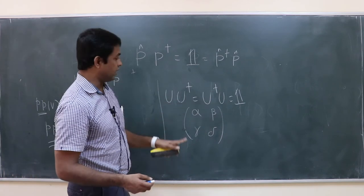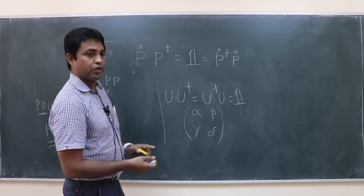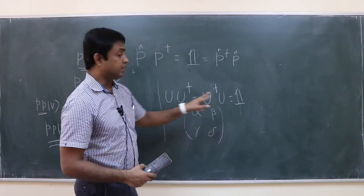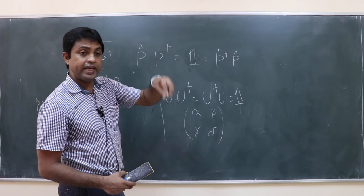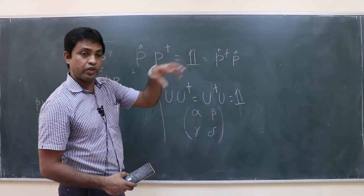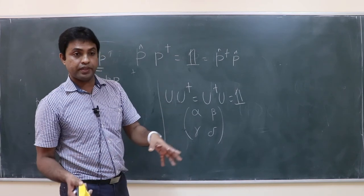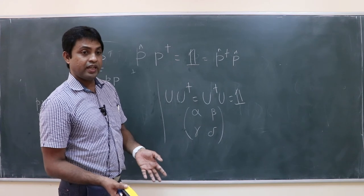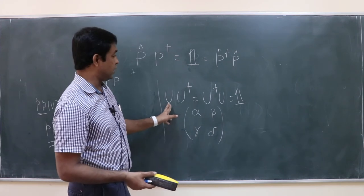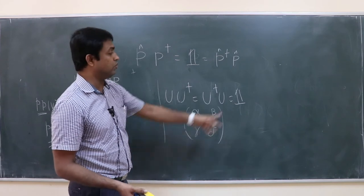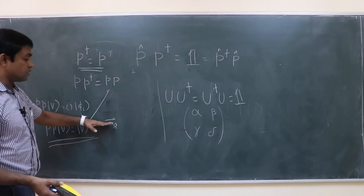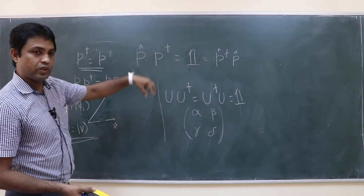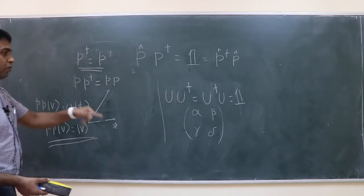When we say U U† = I for an operator, it means: for any vector in its domain, the operator must return the identity result. You cannot check just one specific example. The operator has to act on each and every vector in its domain to qualify as unitary. I will talk about domain and range a little later.